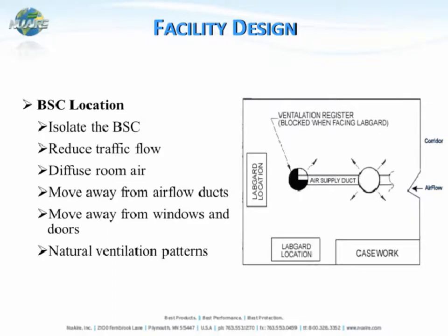Once HVAC is accounted for, you can look at where to locate the biological safety cabinet within the lab. Isolate the cabinet away from doorways and windows, and aim for low-traffic flow — you don't want to place it right by a door where people are walking in and out, as that could affect the performance of the cabinet. Also know where the ventilation registers are within the lab space so they are not blowing air directly at the biological safety cabinet.